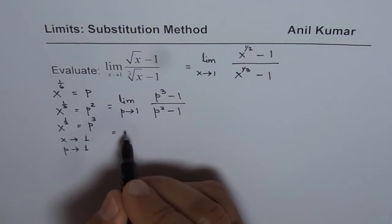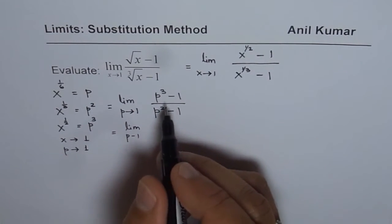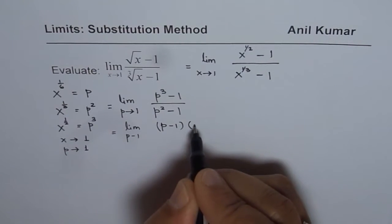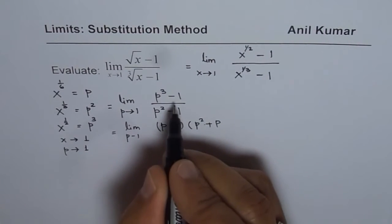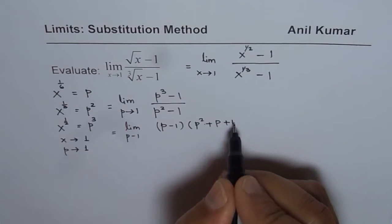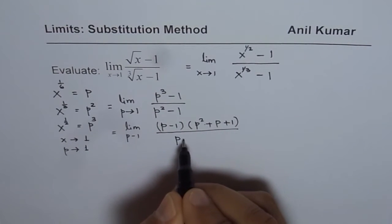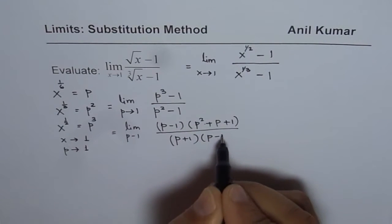So let's move forward. We can now expand p cube minus 1. The expansion a cube minus b cube will be applied. It is p minus 1 times p square plus their product, which is p plus 1 square, which is 1. And in the denominator, we get p plus 1 times p minus 1.